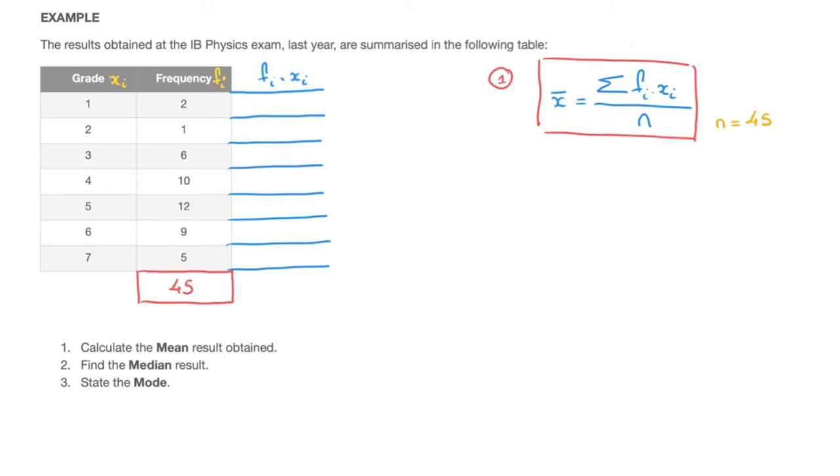Now I complete these cells. For the first one, we have 2 times 1, so that's 2. Next, I have 1 times 2, which is 2. I then have 6 times 3, which is 18. 10 times 4, which is 40. 12 times 5, which is 60. 9 times 6, which is 54. And finally, 5 times 7, which is 35.